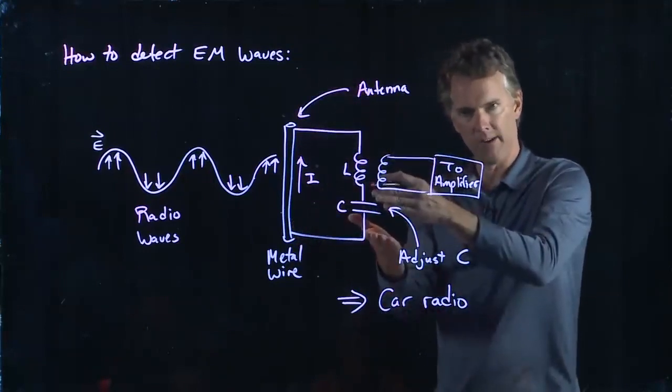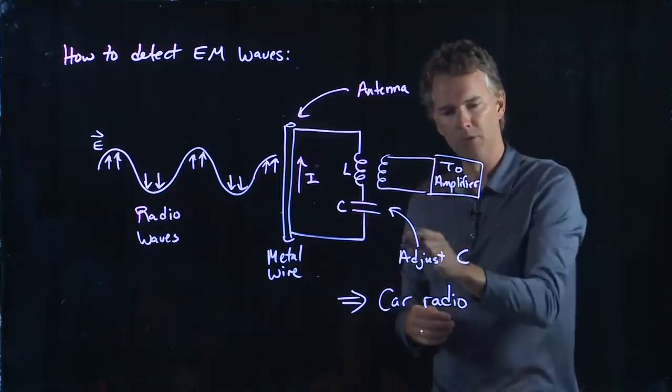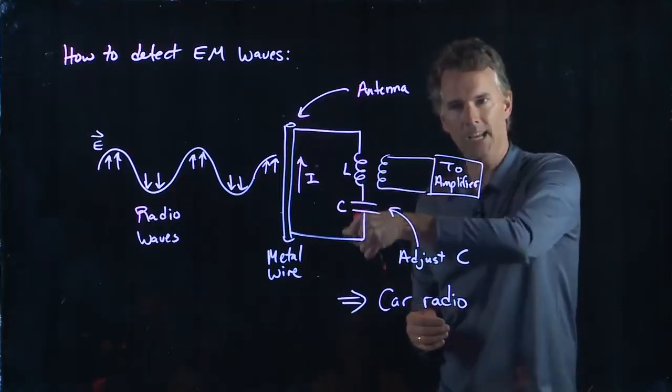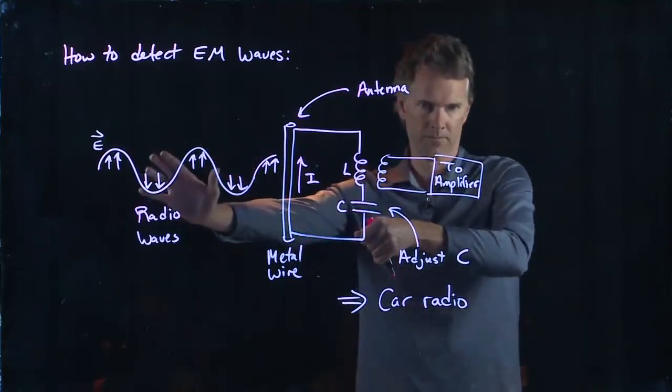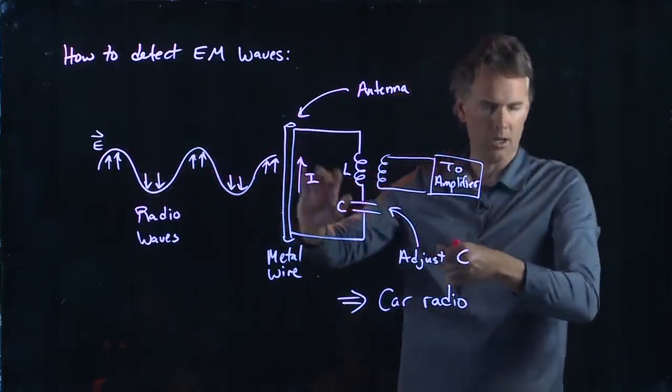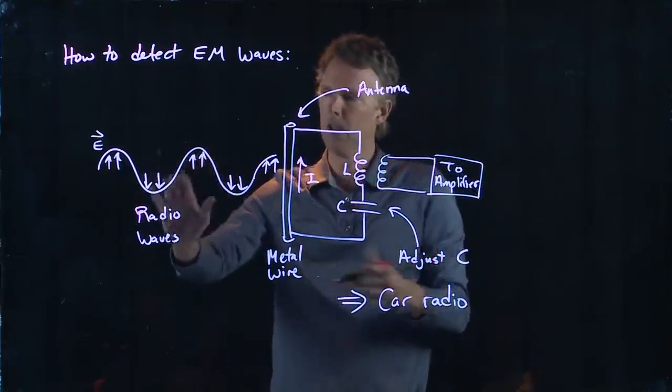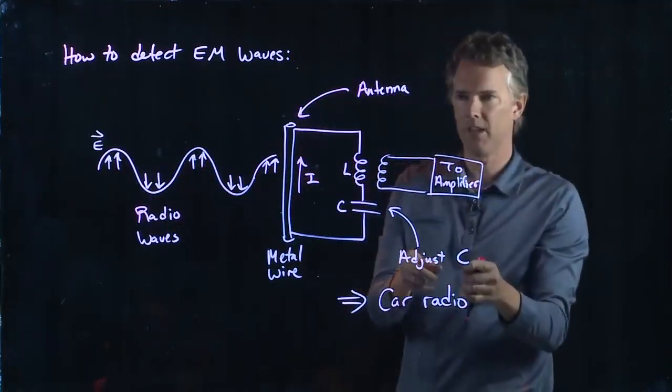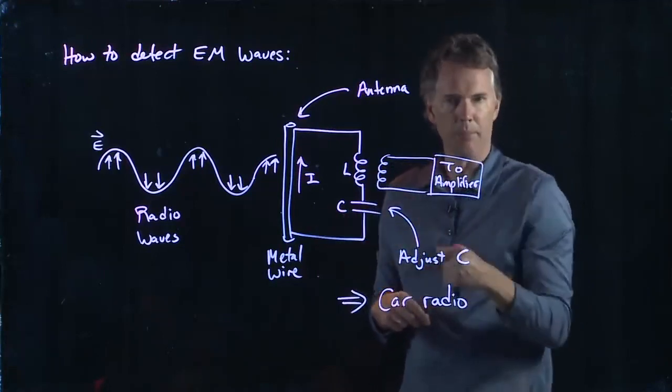It transfers to your car stereo system. And when you pick just the right value of the capacitor, you tune in to a particular frequency. Every different station is coming in on a different frequency. And so there will be different oscillations here. And by adjusting C, you move that frequency up or down the dial.